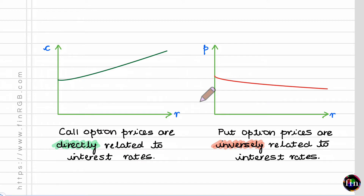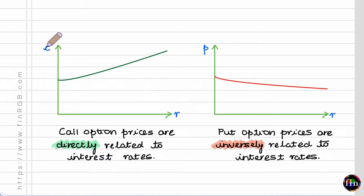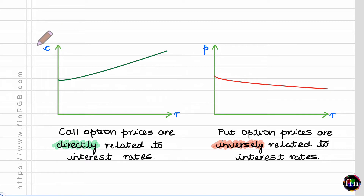Let's begin by directly writing down our final result — the rules of thumb that we have to remember. Call option prices are directly related to interest rates, which tells me that if I were to plot the dependence of a European call option premium on the risk-free rate of interest, as R increases, my European call option premium responds positively and goes up.